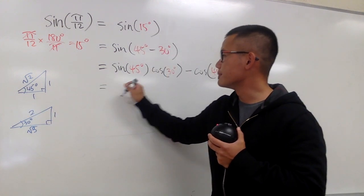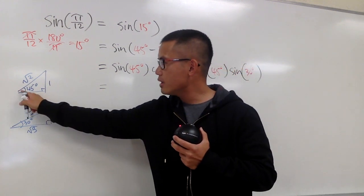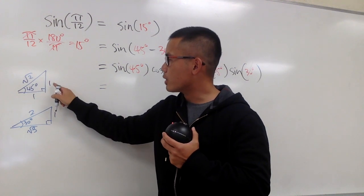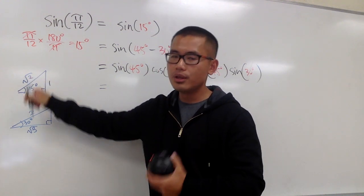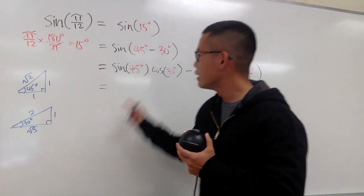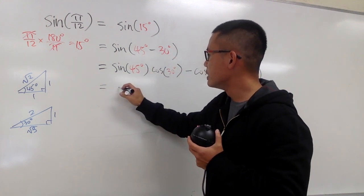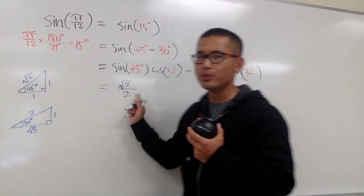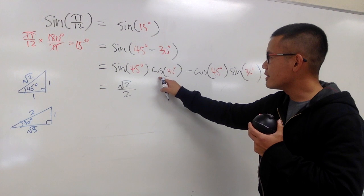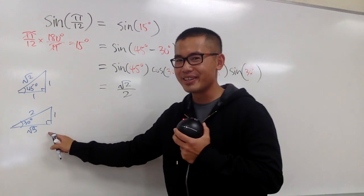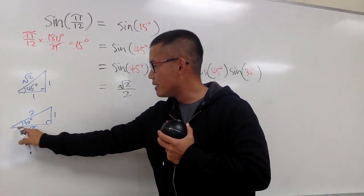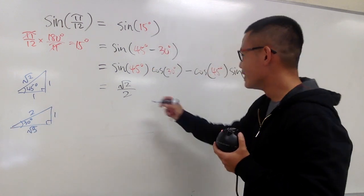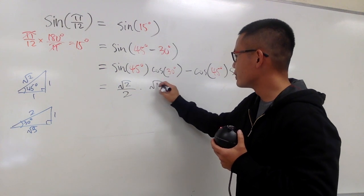Now, sine of 45 degrees - look at this triangle, this is the angle. Sine is the opposite over hypotenuse, which is 1 over square root of 2. Rationalize the denominator, sine of 45 degrees is square root of 2 over 2. And then cosine of 30 - look at this. Cosine is adjacent, which is square root of 3, over hypotenuse, which is 2. So you multiply this by square root of 3 over 2.